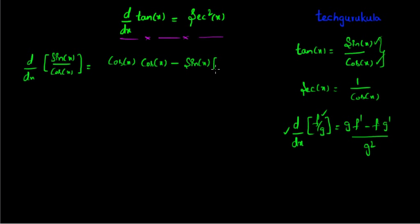sin of x times derivative of cos of x. We know derivative of cos of x is minus sin of x, divided by cos square of x.